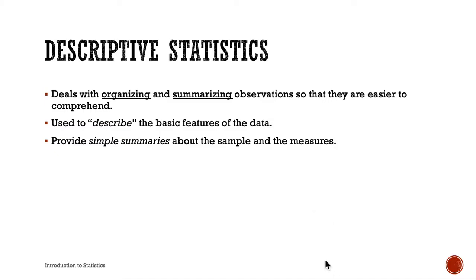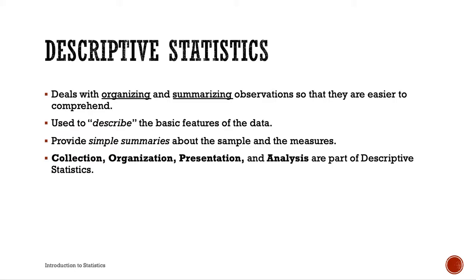From the definition of statistics, we have five words: collection, organization, presentation, analysis, and interpretation. Descriptive statistics concerns the collection, organization, presentation, and analysis of data. When we talk about descriptive statistics, we'll be discussing: tables and graphs, measures of location or centrality such as mean, median, and mode, and measures of variability or dispersion such as range, variance, and standard deviation. So we collect, organize, present, then analyze — that's descriptive statistics.